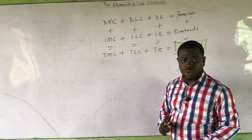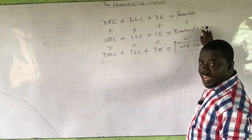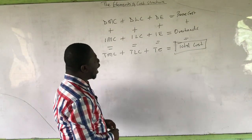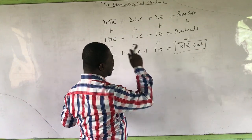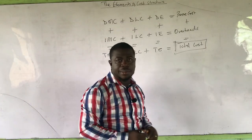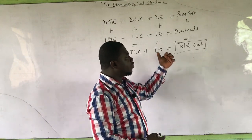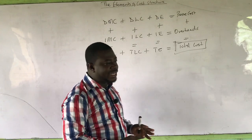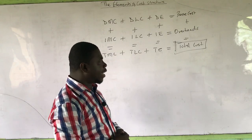In arriving at a total cost, you have many angles you can take. You can get your prime cost first, then add overheads to get the total cost. Or you can take total material costs, total labour costs, and total expenses without splitting them into direct and indirect, and add all the totals to still get total cost. If you understand these things, job costing and related topics will no longer be challenging.